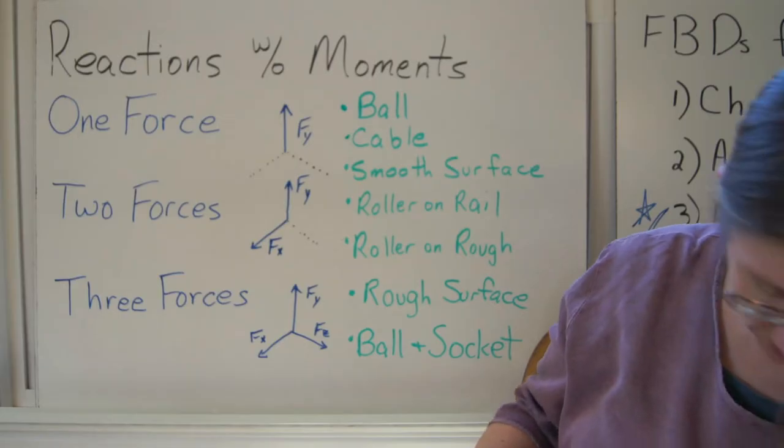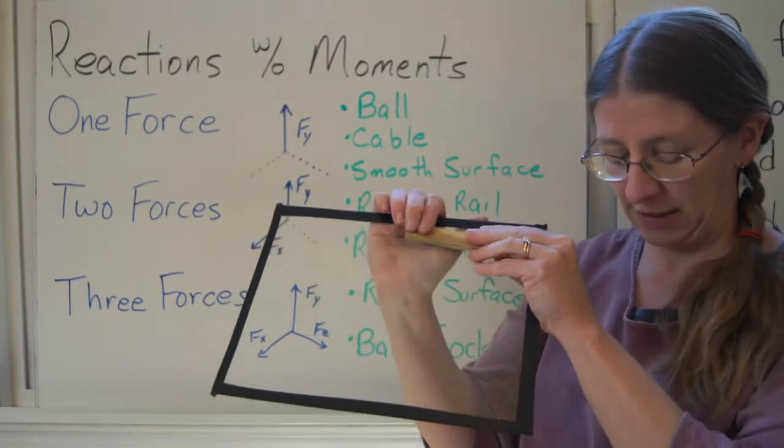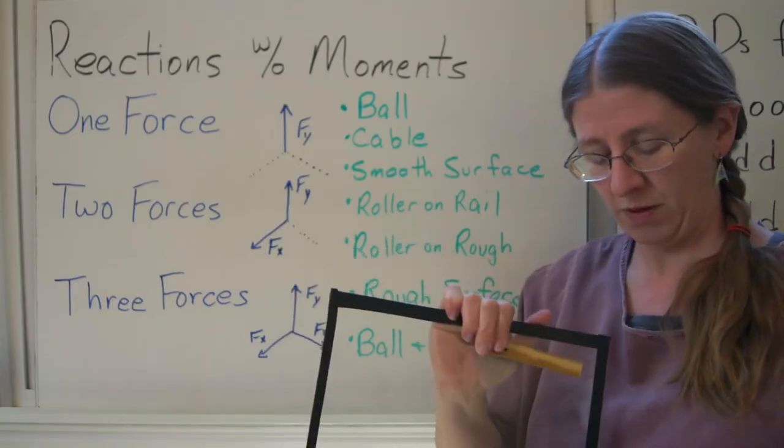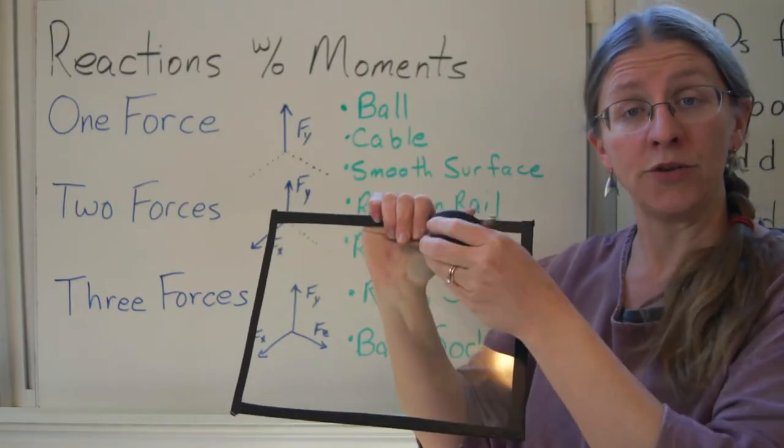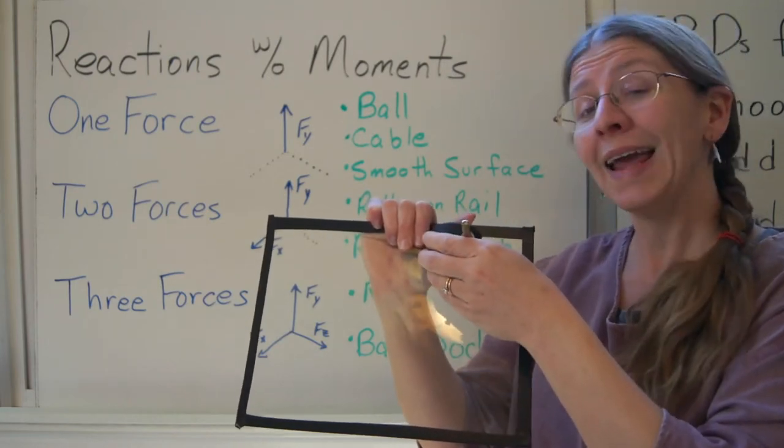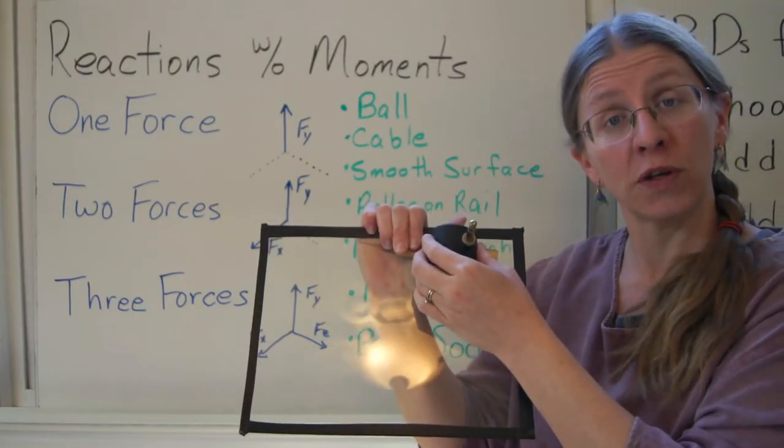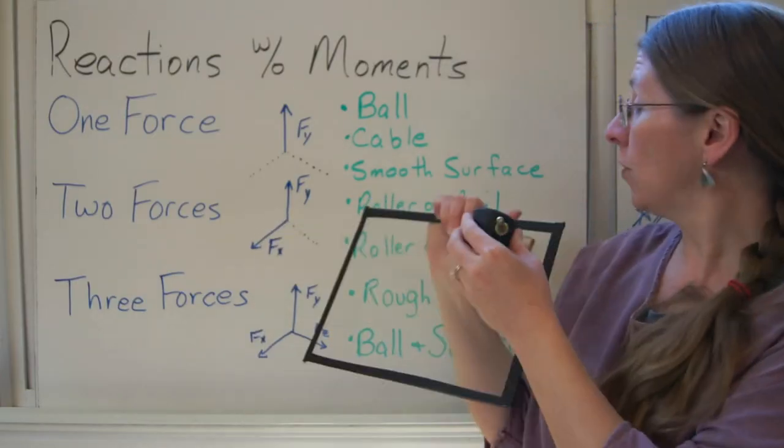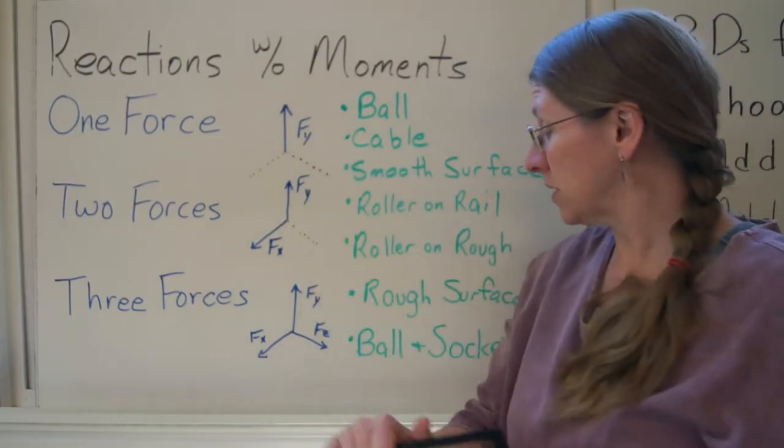I can get two forces from a situation like a roller on a rail. I have a rail like this and I take my roller. It can still rotate in any direction. It can even twist a little bit on the rail. But what it can't do is slide perpendicular to the rail or through the surface. So a roller on a rail will give me a force perpendicular to the rail and a force perpendicular to the surface.